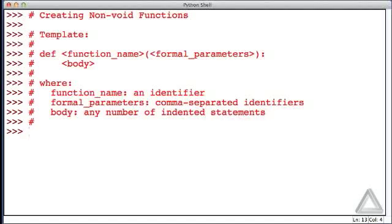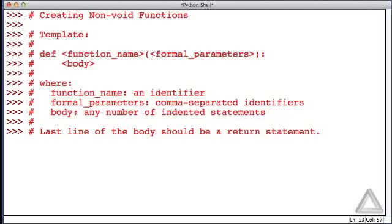Finally, for a non-void function, we should also have that the last line of the body should be a return statement, and we'll see what a return statement is in just a bit. But if a function doesn't take any arguments, then we don't put any of those formal parameters, but we still need the parentheses. We just don't put anything between them.